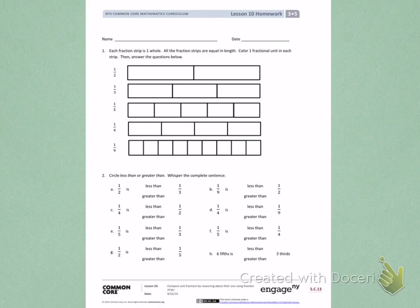Number 1. Each fraction strip is one whole. All the fraction strips are equal in length. Color one fractional unit in each strip. Then, answer the questions below.